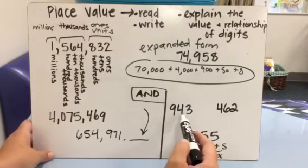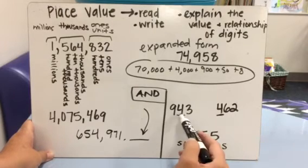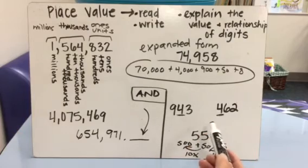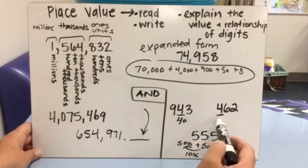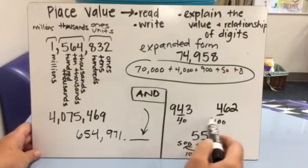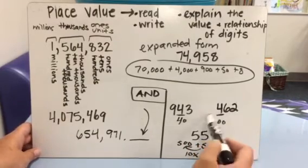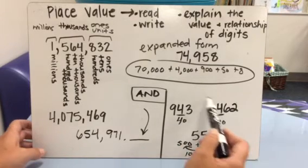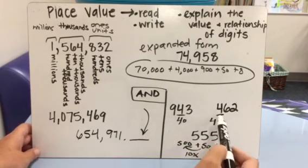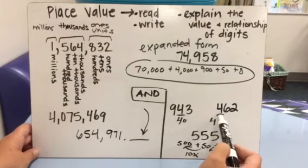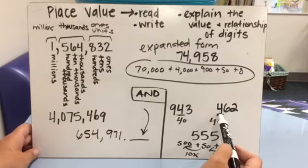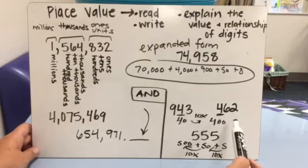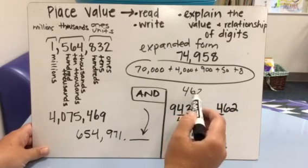If we want to look at the relationship or compare the digits 4 in the tens place and 4 in the hundreds place for these two numbers, well, we know that the value is 40 and we know that the value is 400. The relationship is that 400 is 10 times as much as 40 because it's one place value to the left. So this one's in the tens place, this one's in the hundreds place. And since it's one place value to the left, it is 10 times as much.